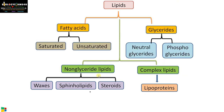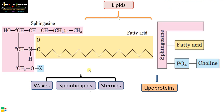The second one is sphingolipids. In the case of sphingolipids, the backbone is sphingosine. The NH group on the second carbon has a fatty acid chain. The first carbon is bonded to an X group that can vary. If it is phosphocholine, then it is called sphingomyelin, which is present on neurons.